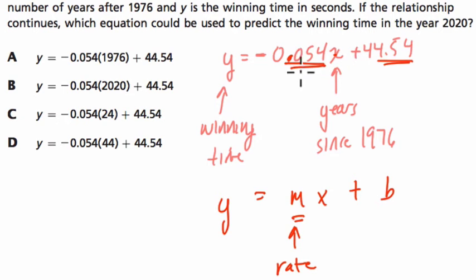Every year, I guess, they're getting a little bit faster. So I knew this because we could plug in values, but also because b is the y-intercept, and that's our starting value. So that must be our starting time.